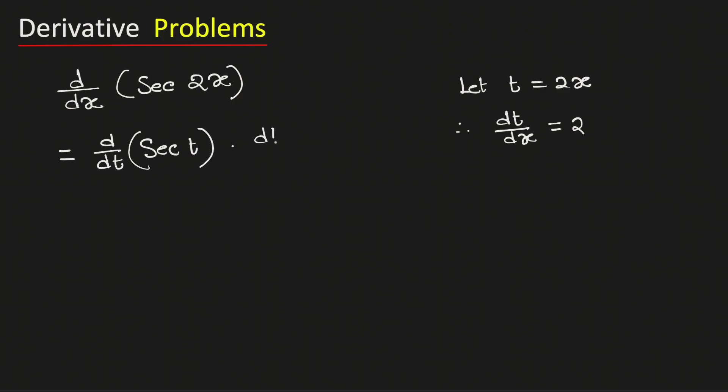Then we need to multiply with dt/dx. This is the chain rule of derivatives.